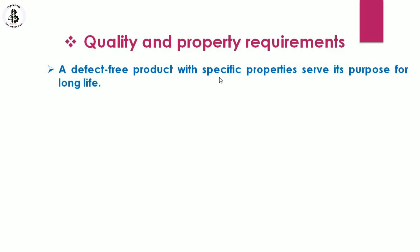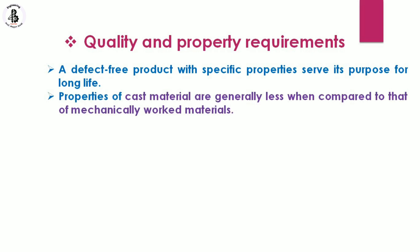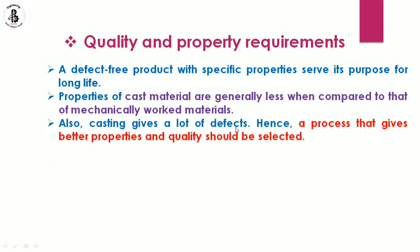A defect-free product with specific properties serves its purpose for a long life — this is an essential requirement of any production house. Properties of cast materials are generally less compared to mechanically worked materials. So for casting processes, the resulting material properties are lower than mechanically worked alternatives. The process should be selected as per application requirements, balancing economic consideration and product durability, without compromising quality. Casting also gives many defects, hence a process that gives better properties and quality should be selected.